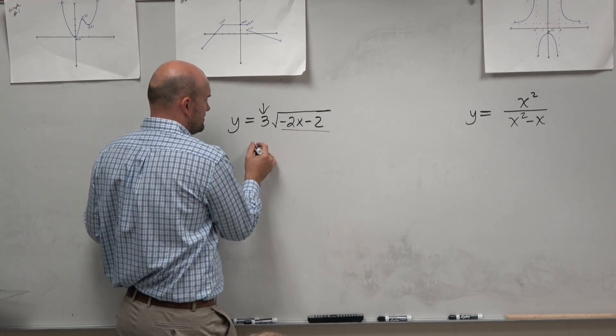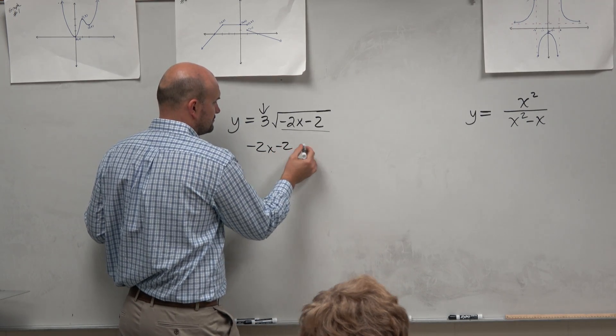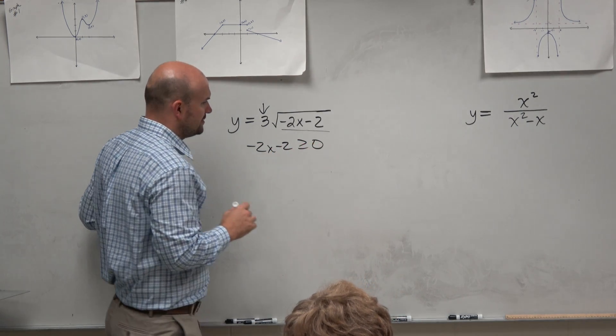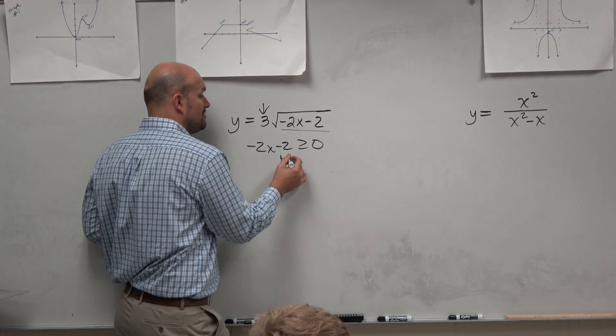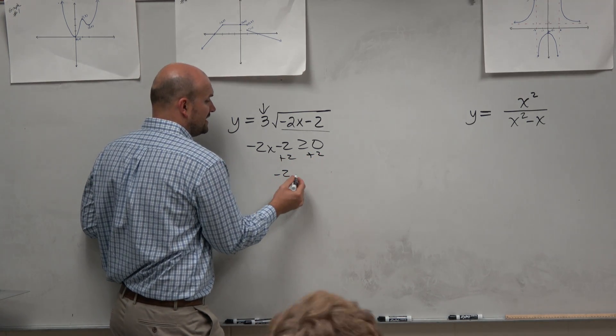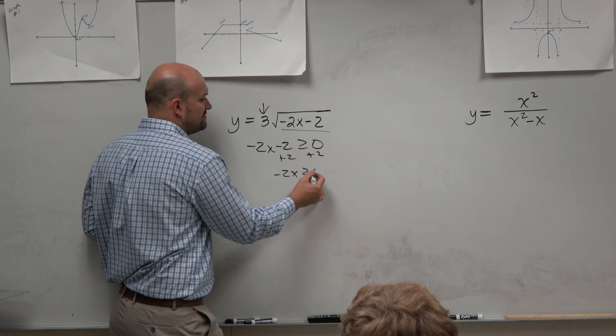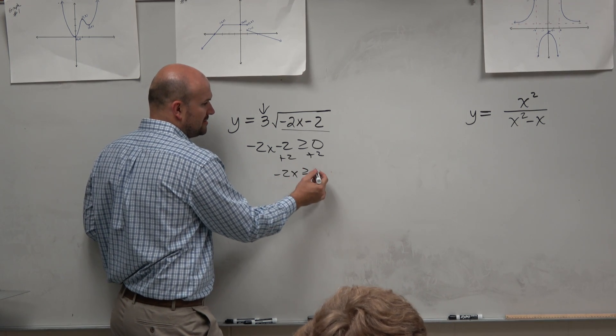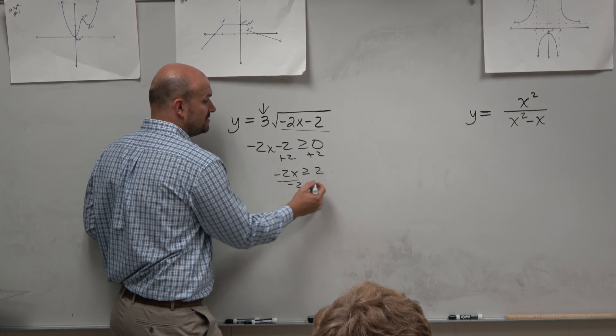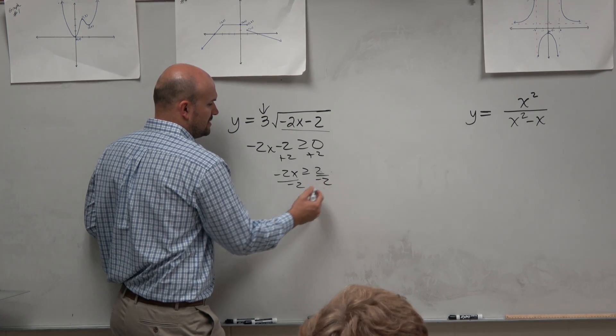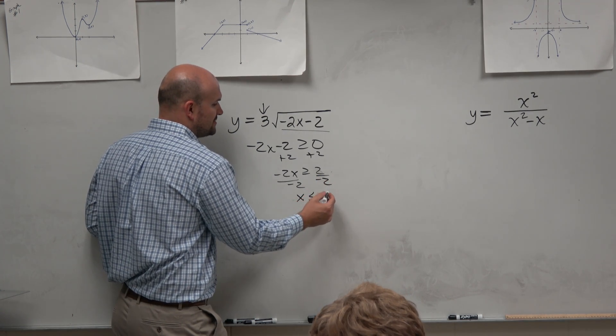So in this case, just take the radicand, set it greater than or equal to 0. Now, do remember, guys, when you are solving inequalities, when you have to divide or multiply by a negative number, we need to make sure we flip the inequality sign. So x has to be less than or equal to negative 1.